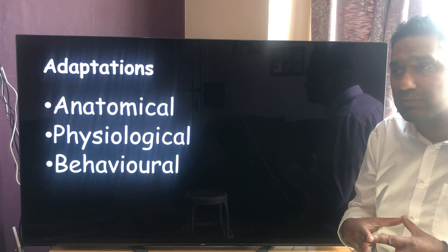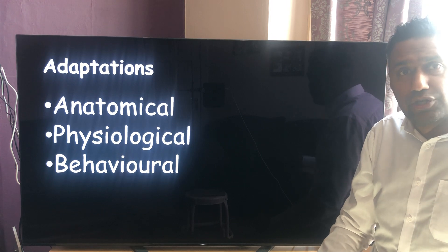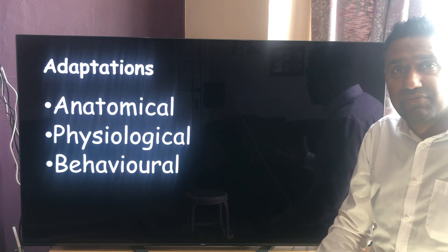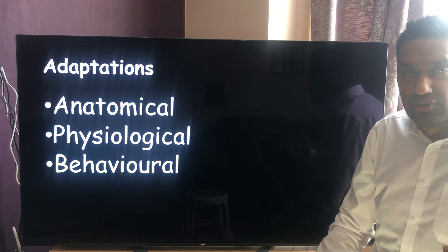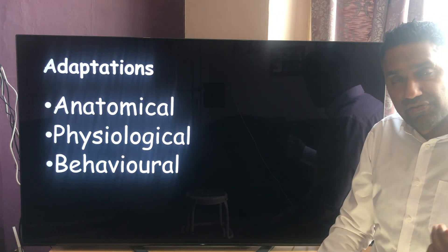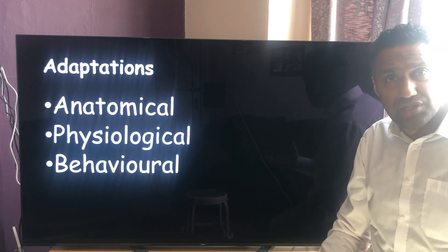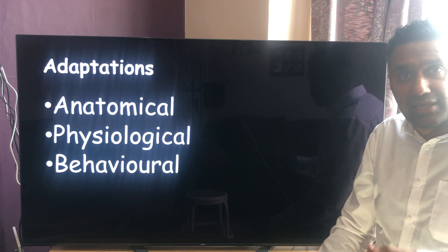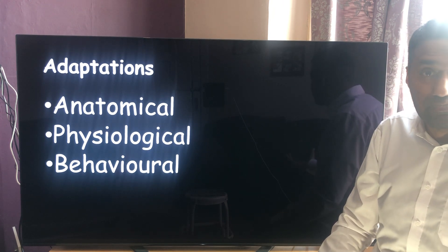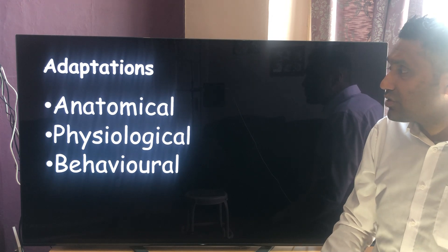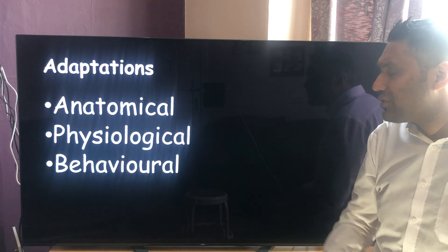Physiological adaptations are to do with the biochemistry of the organism. An example from your textbook is the kangaroo rat, which lives in the desert where there's very little water. Other mammals mainly oxidize carbohydrates in aerobic respiration to release water, but the kangaroo rat can oxidize fats — metabolizing lipids inside its body to produce water. That's a physiological adaptation to hot, dry desert conditions.